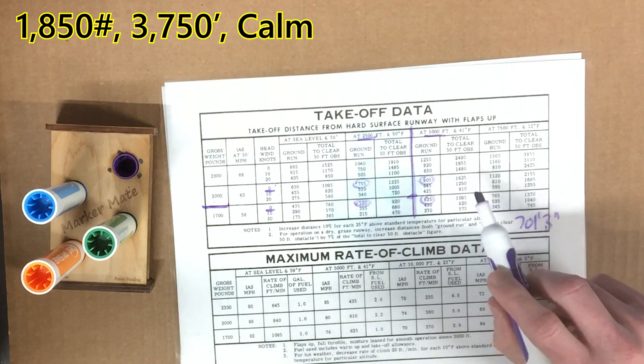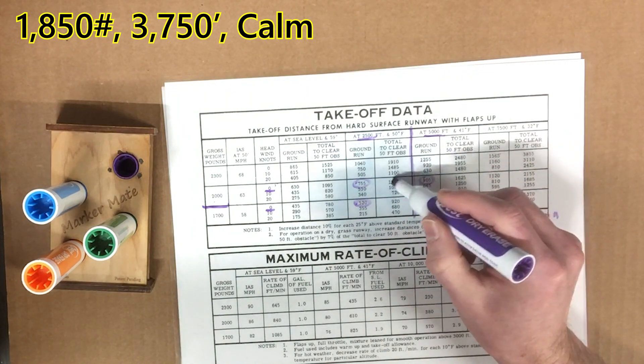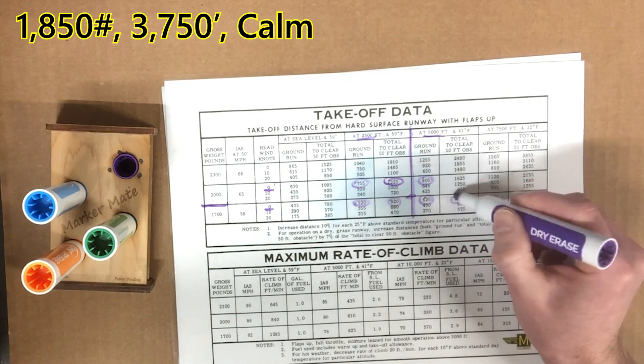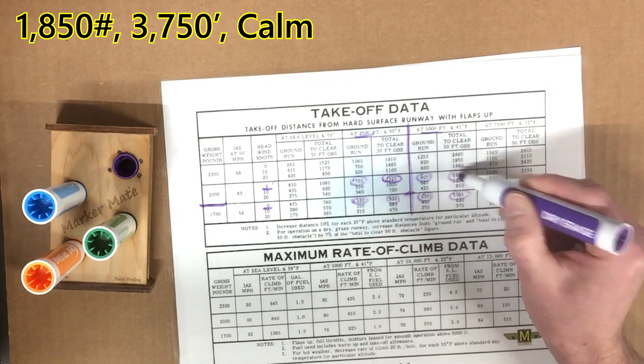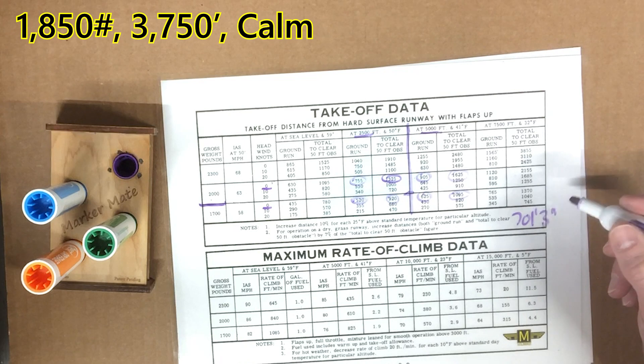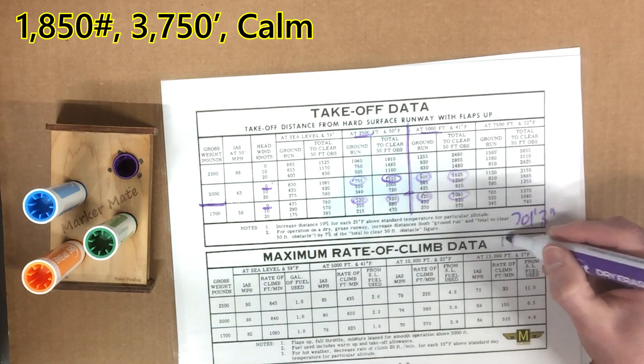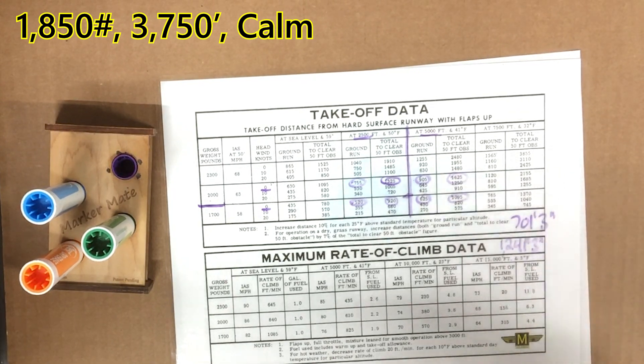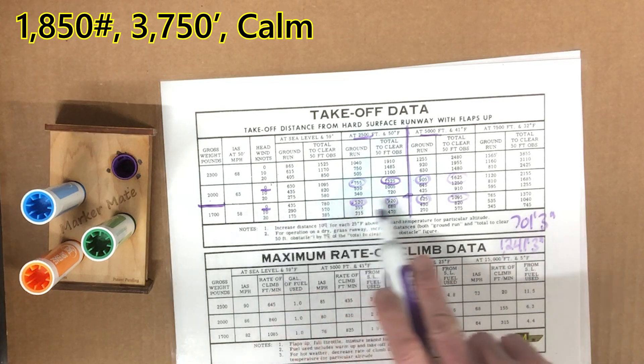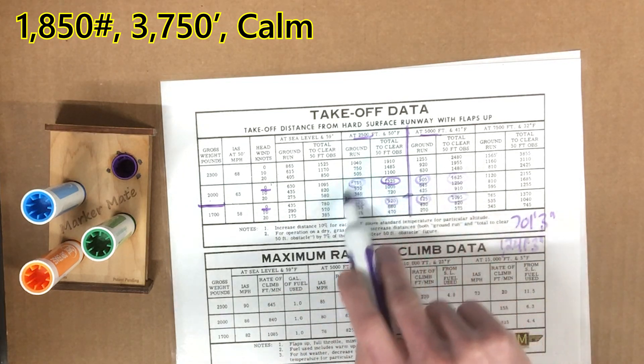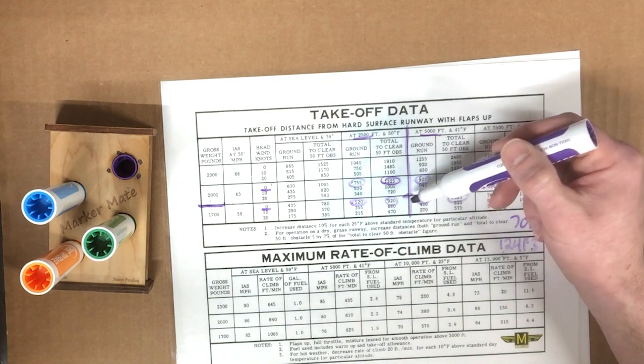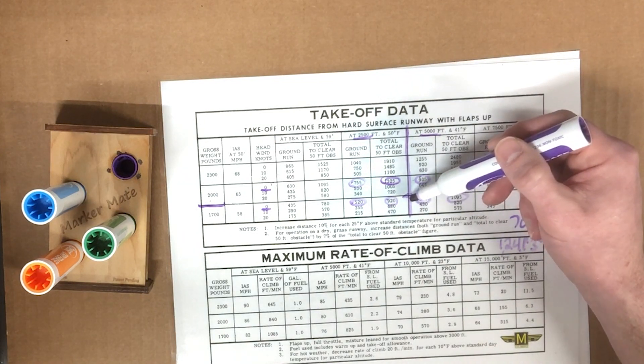And the total distance over a 50-foot obstacle then is the average of this 1,325, 920, 1,095, and 1,625. And so our ground run, or excuse me, the 50-foot obstacle distance then is 1,241 feet, 3 inches. Okay? So see, it's not that bad. You've got the data points. You just need to calculate the averages. But only in this case, when it's right in the center, can you do a straight average.